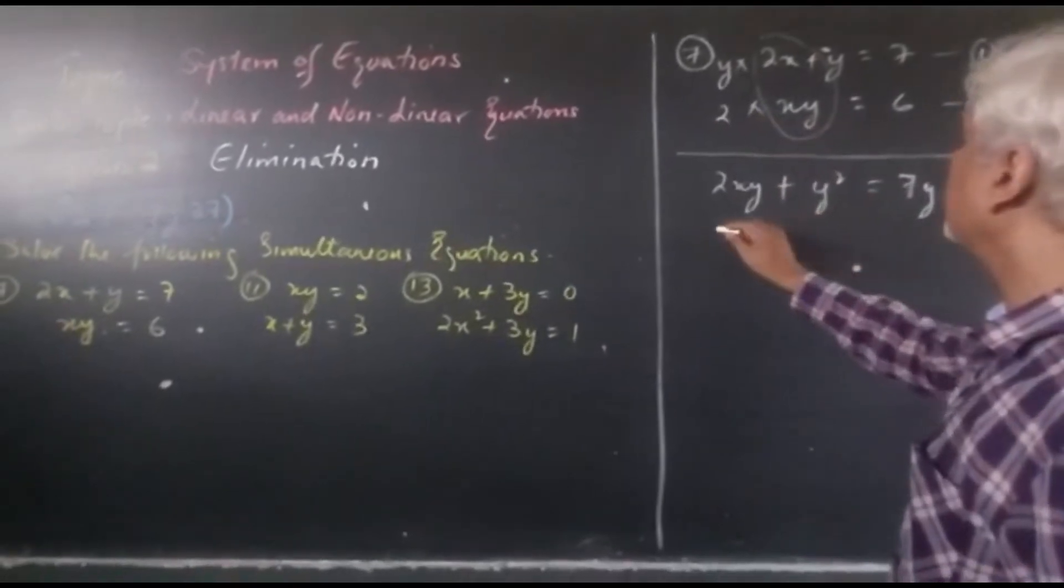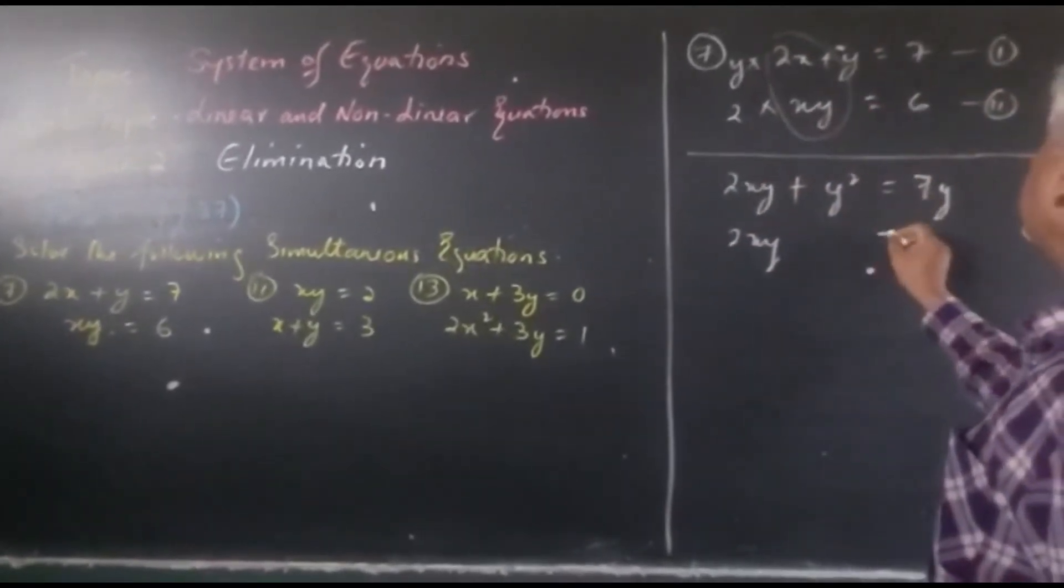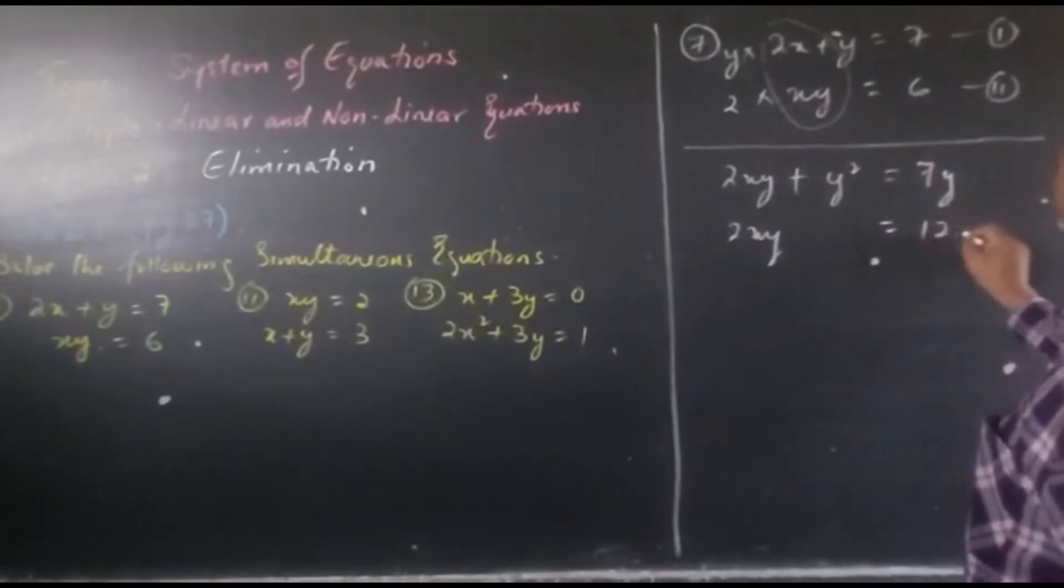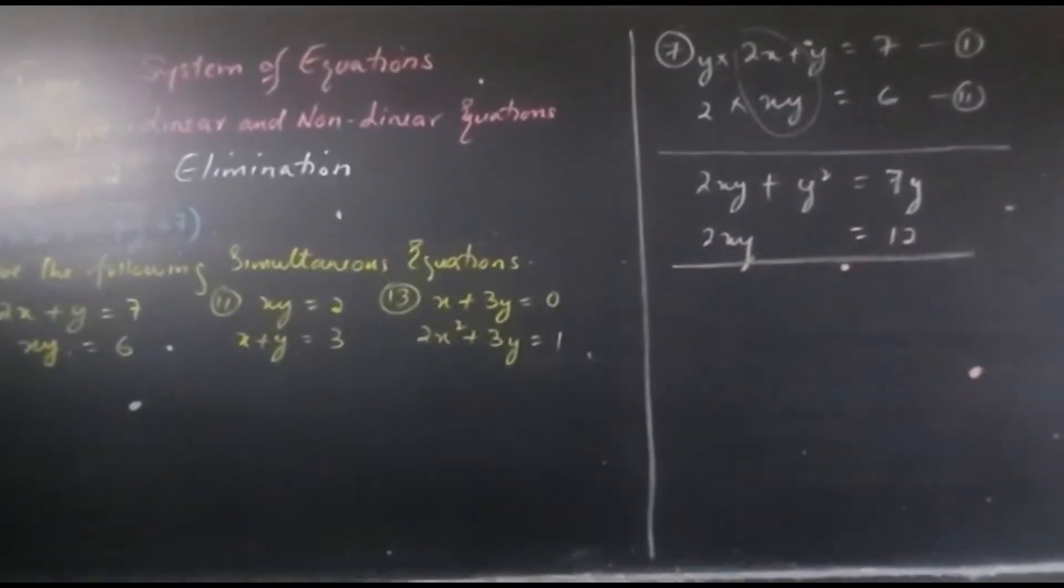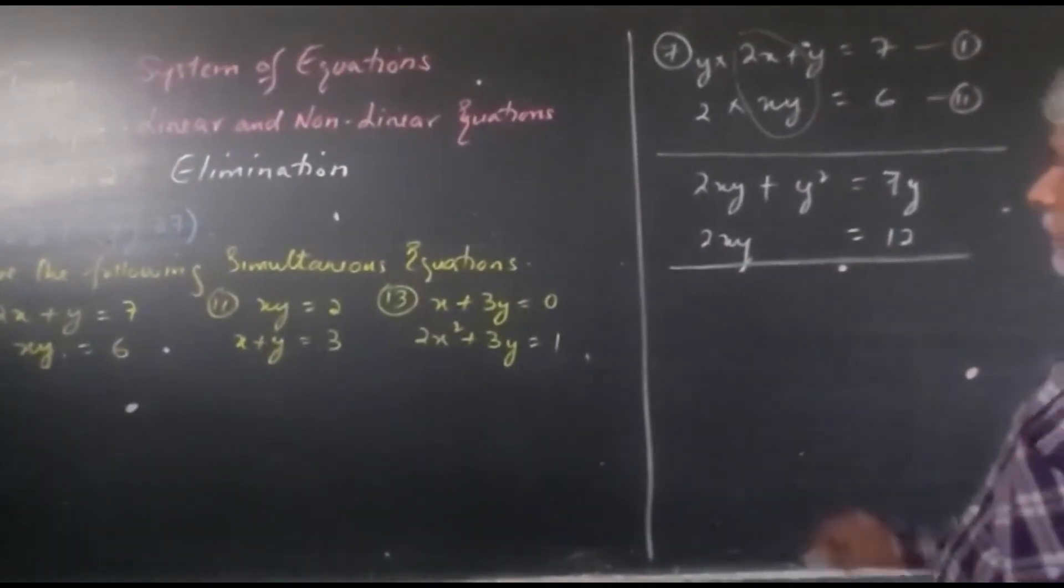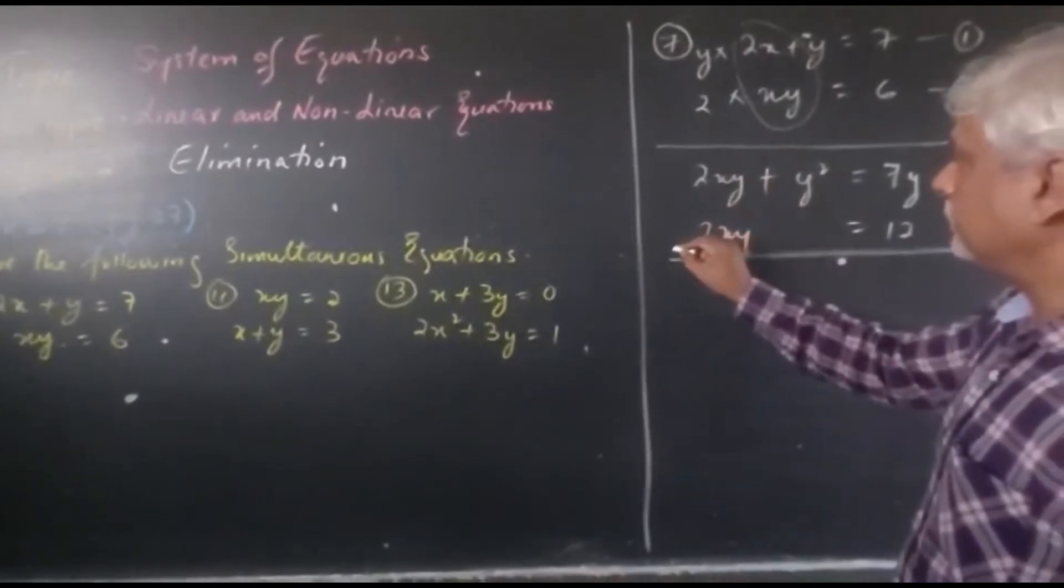Second equation, we are multiplying with 2. 2 times xy will give you 2xy equals 2 times 6, 12. Now we are subtracting. Sign changes, it will be minus, it will be minus, it will cancel.